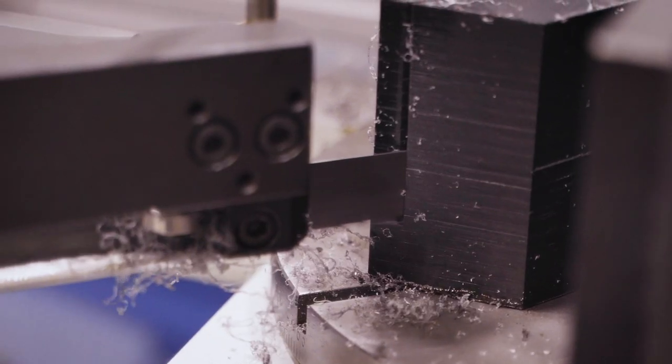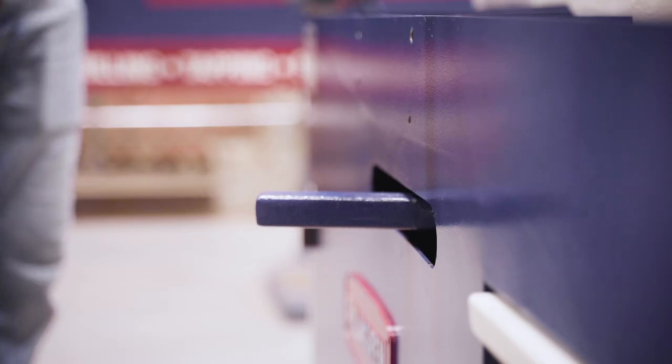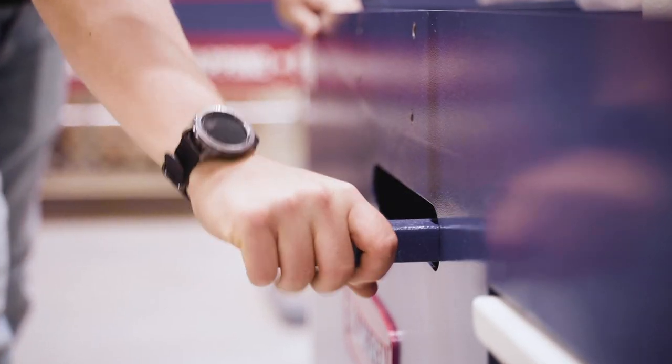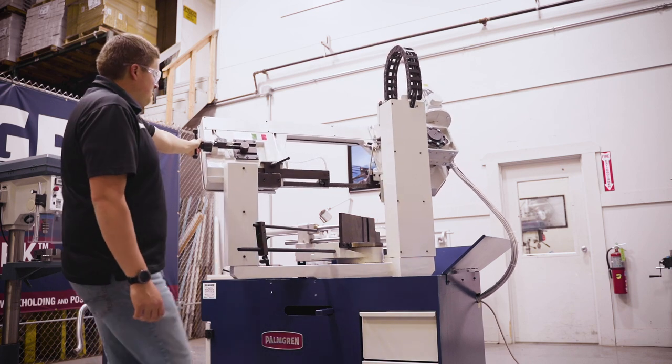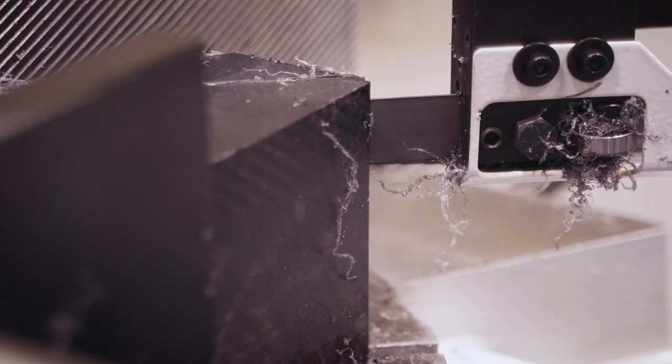While this saw certainly has a lot to offer, the best feature of this machine is its unique ability to miter up to 60 degrees to the right. This machine combines the rigidity of a dual column design with the miter cutting capabilities of a fabrication saw.